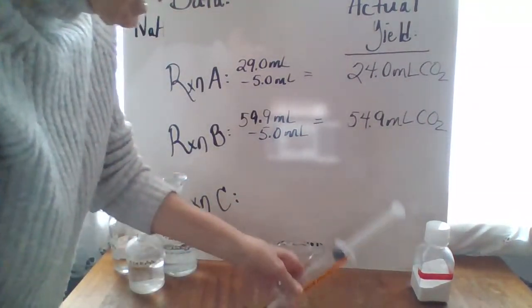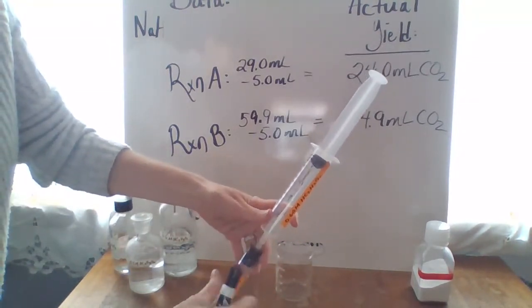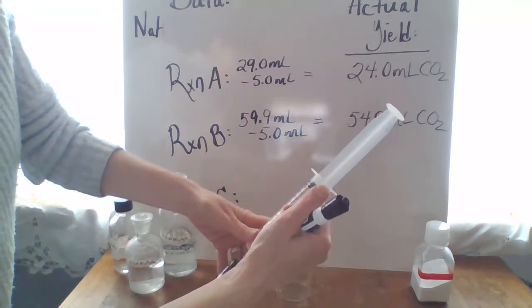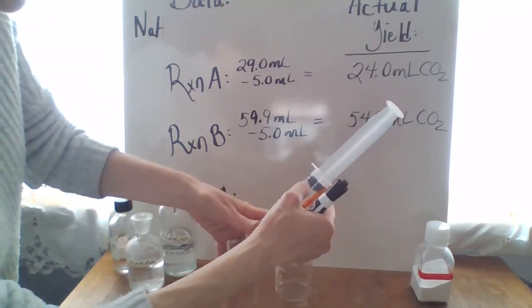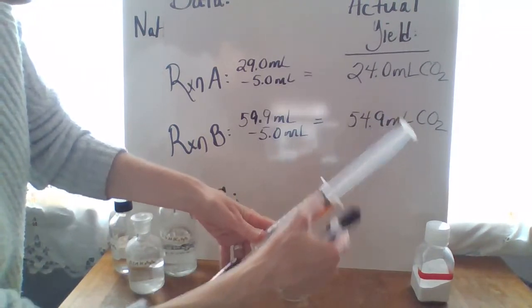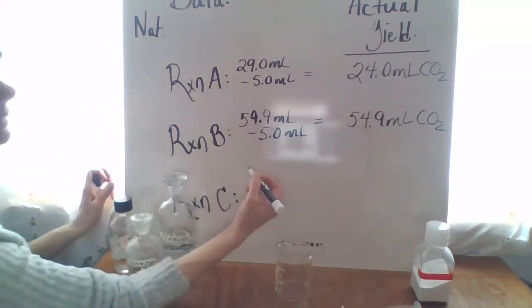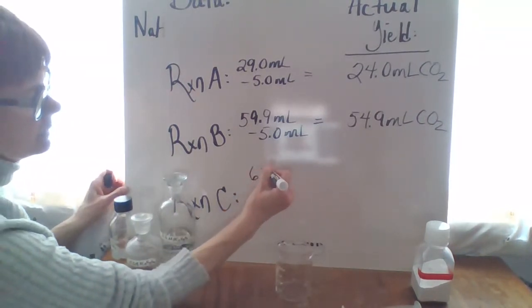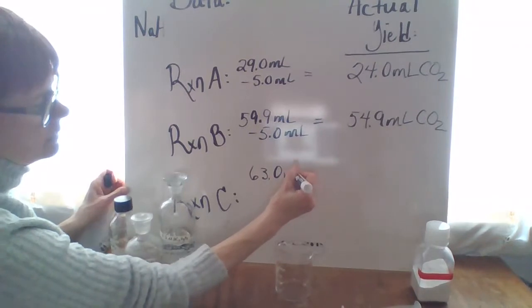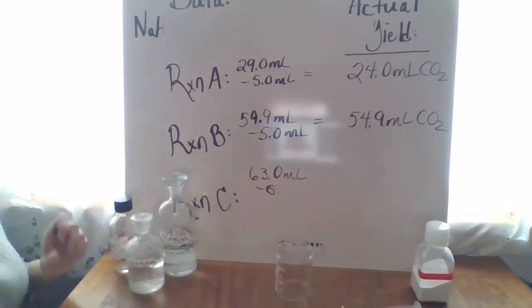And then for reaction C, I'm going to have to do an estimate above 60 mils. And that looks like about 63.0 milliliters. So I'll put that down here. And subtract out our 5.0 milliliters.